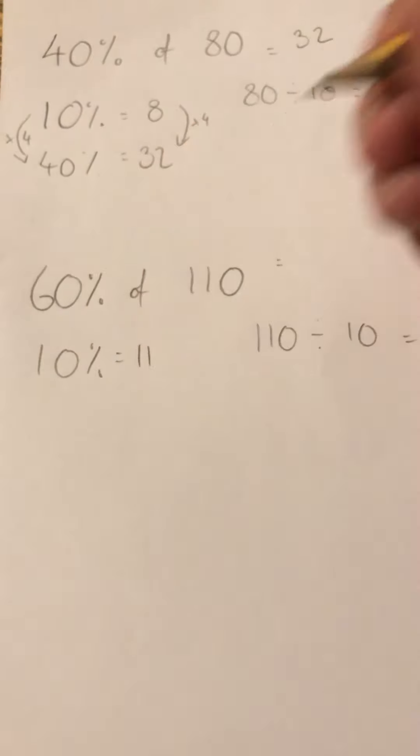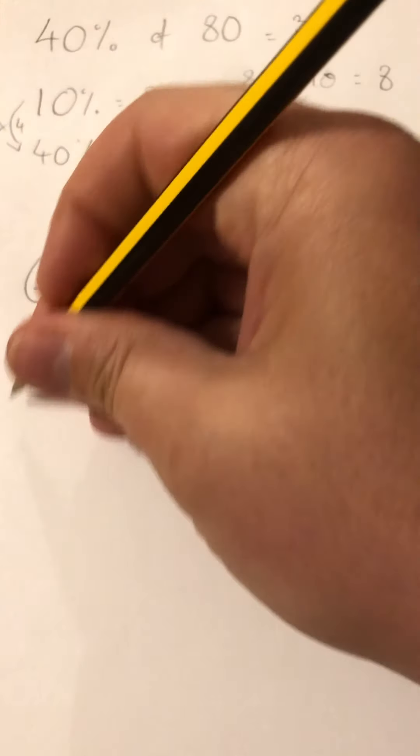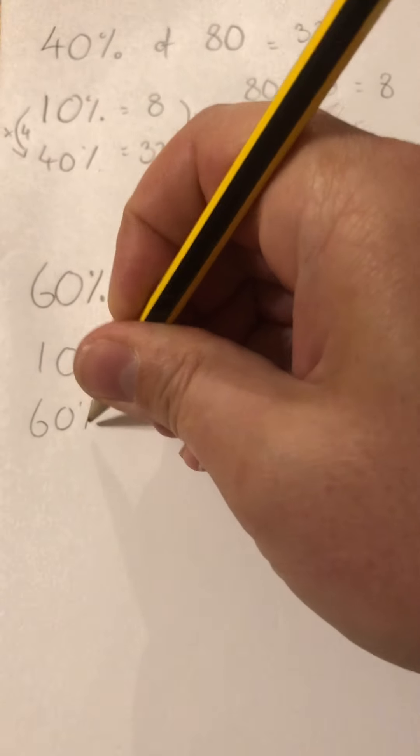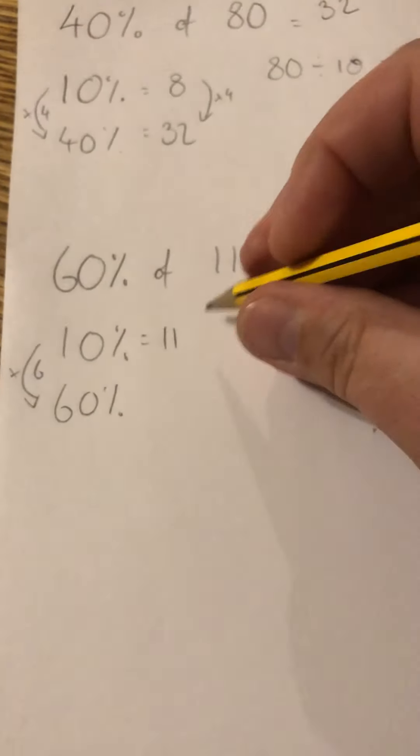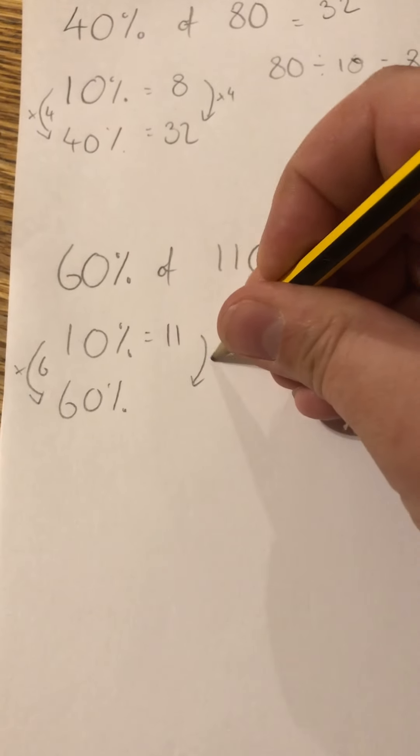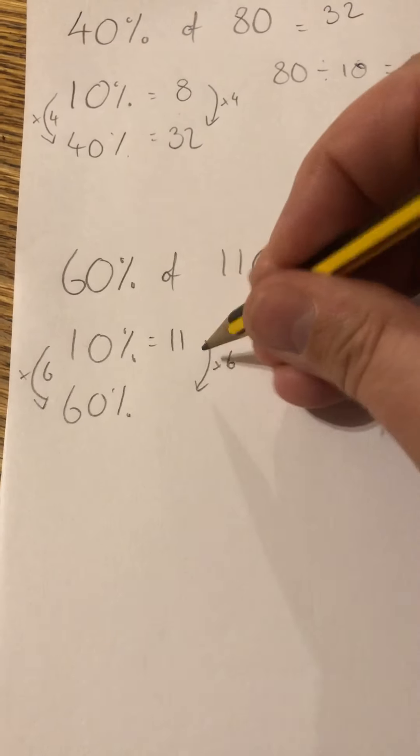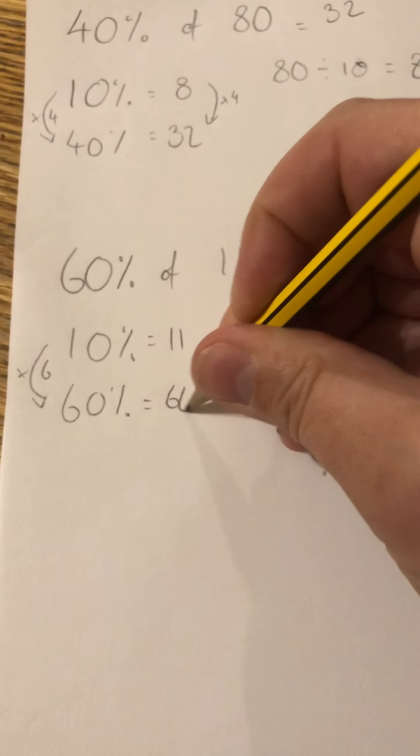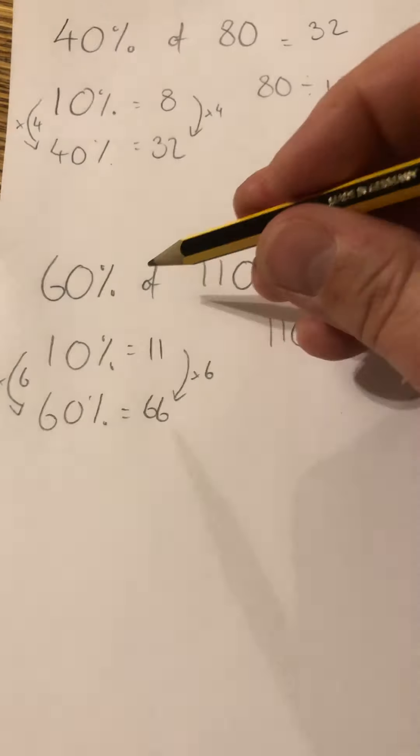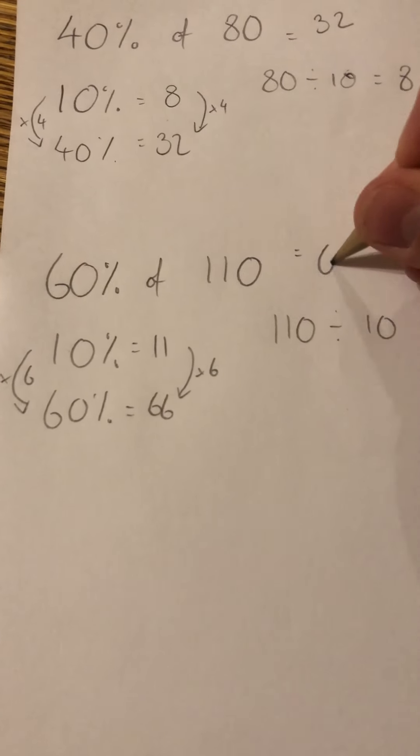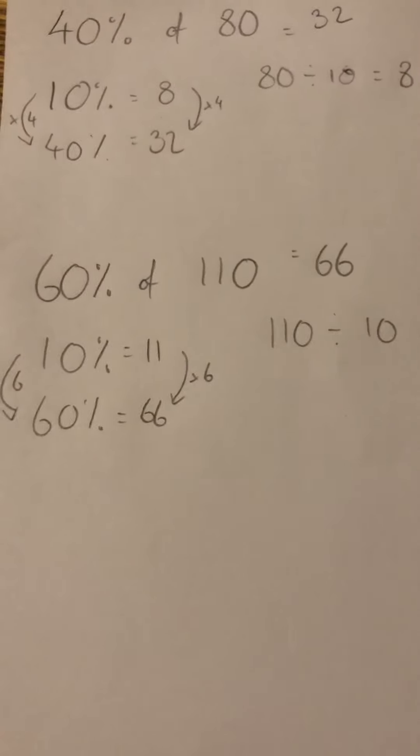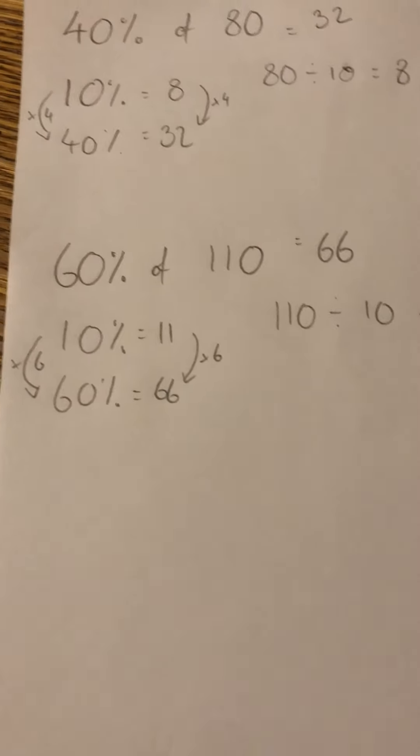60% is 6 times bigger than that, so 6 times 11 is 66. Therefore, 60% of 110 is 66. Have a go yourselves now—you have to do the work.